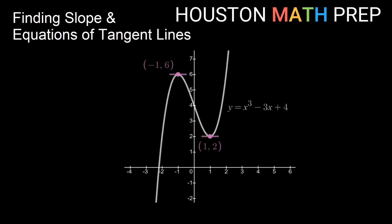Looking at the graph of x³ - 3x + 4, at (1, 2) we have a horizontal tangent line, and at (-1, 6) we also have a horizontal tangent line. Thanks for watching everybody — we'll see you in the next video.